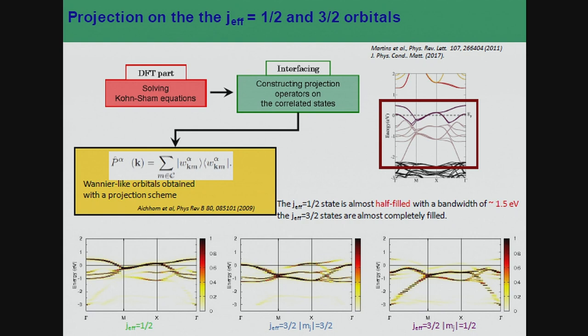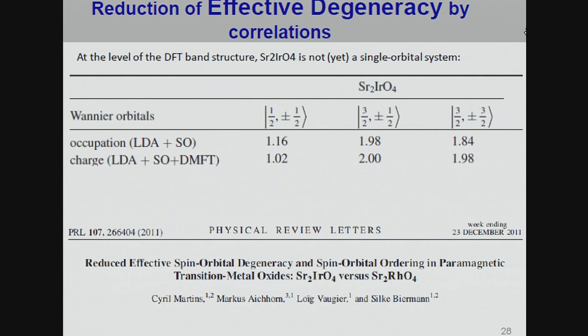What is important is to see where the bands corresponding to dominant J_eff = 1/2 or 3/2 character actually are. Let's take this band structure and project it onto J_eff = 1/2 and 3/2 orbitals. While the J_eff = 3/2 one-half states are indeed below the Fermi level, the J_eff = 3/2 three-half states are still quite present at the Fermi level and still carry spectral weight. So at the DFT level, strictly speaking, this material is not yet a single-orbital system. If I do just LDA with spin-orbit coupling, the 3/2 one-half state is full, but the J_eff = 1/2 state is not completely half-filled — there is some charge transfer.